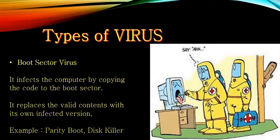Boot sector virus infects the computer by copying code into the boot sector. The boot sector is the place where all the starting information of a computer is kept. So if something is wrong in the boot sector, the computer cannot begin its work properly. It replaces the valid content with its own infected version, so when you start the computer, invalid and infected programs load instead. Examples of this type include Parity Boot and Disc Killer.